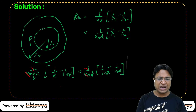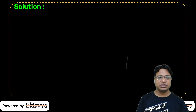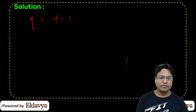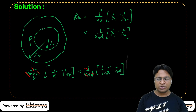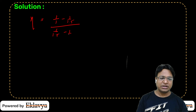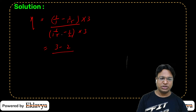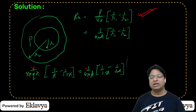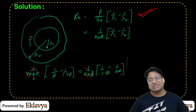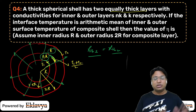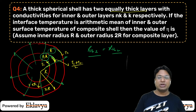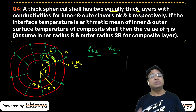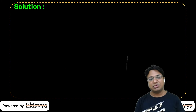After cancelling 1/4π and R: η = (1 − 1/1.5) / (1/1.5 − 1/2) = (1 − 2/3) / (2/3 − 1/2) = (1/3) / (1/6) = 2. So η = 2 is the answer. We used the spherical layer thermal resistance formula and the fact that equal temperature drops mean equal thermal resistances in series.